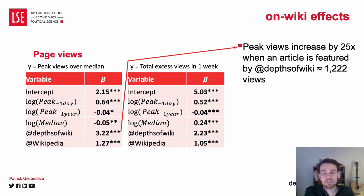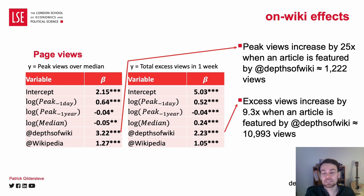Peak views increased by 25 times when an article is posted by Depths of Wikipedia, compared to other accounts — equivalent to around 1,200 extra views. Total access views increased by 9.3 times when an article is featured by Depths of Wikipedia compared to other accounts, equivalent to around 11,000 views. The effect is substantially larger for Depths of Wikipedia than for the official Wikipedia account.